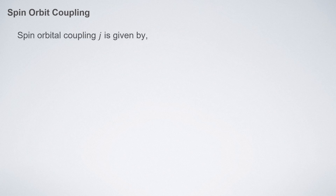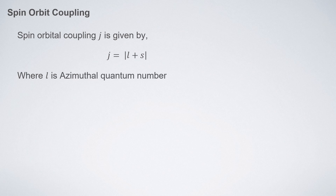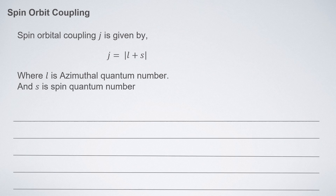The spin-orbital coupling constant j is given by: j equals the magnitude of l plus s, where l is the azimuthal quantum number and s is the spin quantum number. For s orbitals, l equals zero and s is always plus or minus one-half, so j becomes either 0 + 1/2 = 1/2 or 0 − 1/2 = −1/2. Taking only the magnitude, j is always one-half.